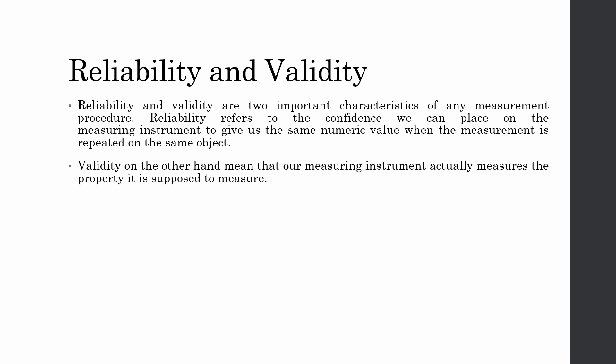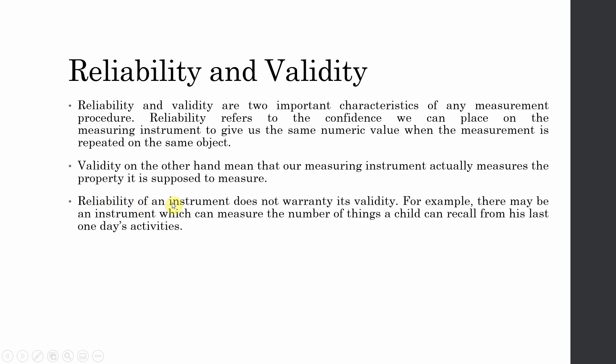Validity, on the other hand, means that our measuring instrument actually measures what it intends to measure — what it is supposed to measure. So reliability is about consistency, and validity is about accuracy. These are the central terms associated with these two concepts. Reliability of an instrument does not warranty its validity, so anything that is reliable does not necessarily mean that it is valid.